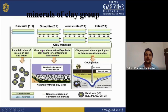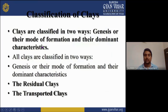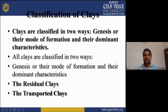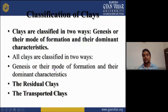These are the minerals of the clay group. The first one is kaolinite and illite, which are used for making this kind of product. Clay is classified in two ways: first, by genesis or their mode of formation, and second, by their dominant characteristics. All clays are classified into two types: first is residual clay and second is transported clay.